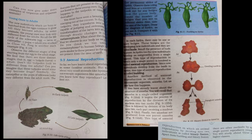Then, what happens to the tadpoles or caterpillars thereafter? You must have seen a beautiful moth emerging out of the cocoon. In the case of tadpoles, they transform into adults capable of jumping and swimming. This is the definition for metamorphosis. The transformation of larva into an adult through drastic changes is called metamorphosis.